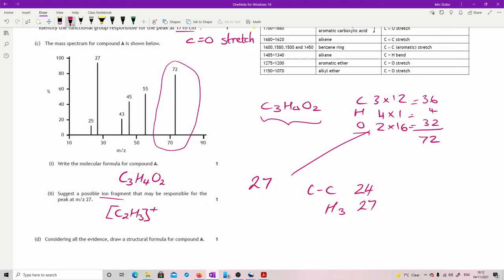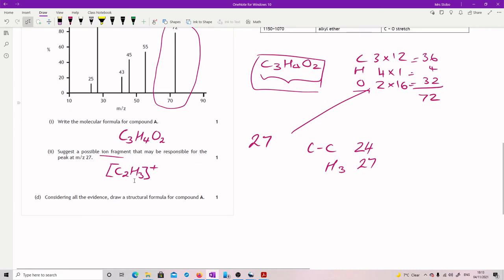Considering all the evidence draw a structural formula for compound A. So all my evidence is here is my formula. And I've said there's a C double bond O stretch. And from the table, I'm saying that's in a carboxylic acid. So let's put the carboxylic acid in first. C double bond O bond OH. So I've already used up one of my carbons from in here and one of my hydrogens and both of my oxygens.